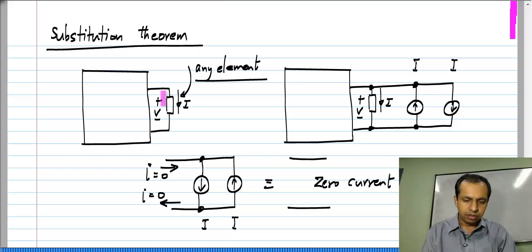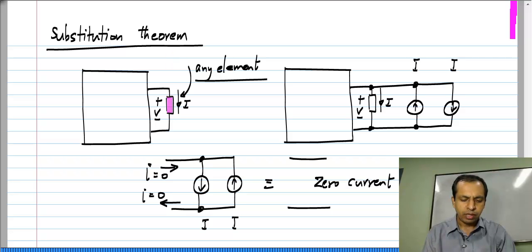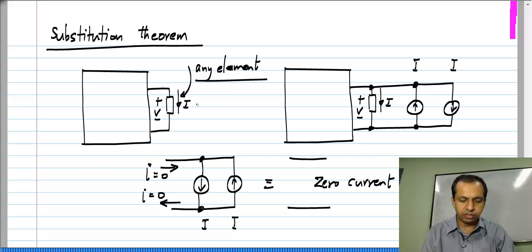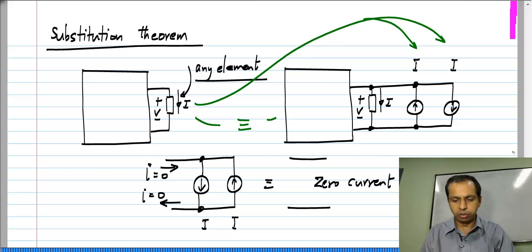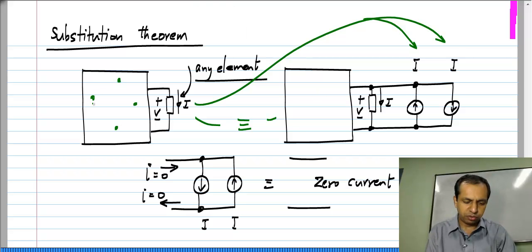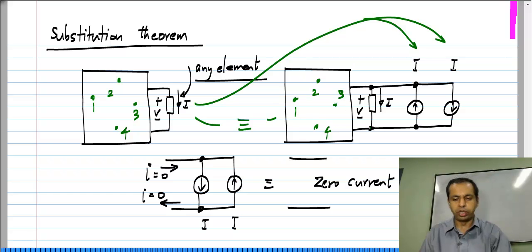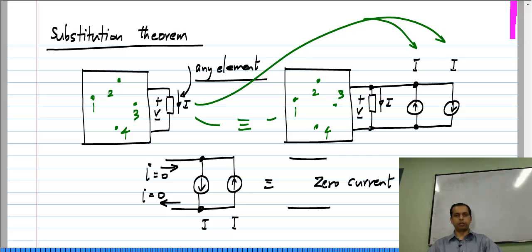Keep in mind that the circuit is operating in some condition. It has some values of independent sources and so on, and the voltage across this element happens to be V and the current through it happens to be I. I choose the exact same current that is flowing through this, make two copies of it, and connect them in anti-parallel across the element. Clearly these two cases are identical — the voltage does not change, nor does any branch voltage or current in the circuit, because I have really not made any changes. I have just connected a zero current source across the element.